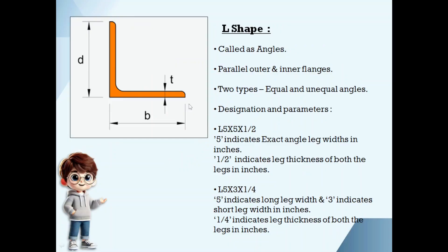L shape, we call these as angles. For these angles, there will not be any flange or web. We call these two as legs of the angle, not flanges or web. This is inner surface and this is outer surface. These inner surfaces and outer surfaces are completely parallel to each other in an angle.